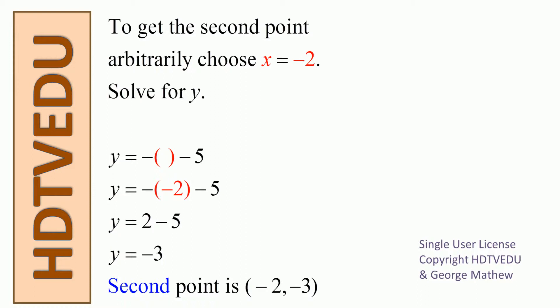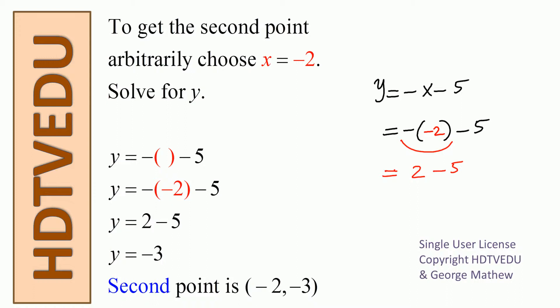To get the second point, we choose x equals negative 2. We leave everything as before except substitute negative 2 for x. What is negative of negative 2? Positive 2, and then we have negative 5, so it is negative 3. When you substitute negative 2 for x, we get negative 3. Do not forget it is an ordered pair — x comes first, y comes second. So our second point is negative 2, negative 3.